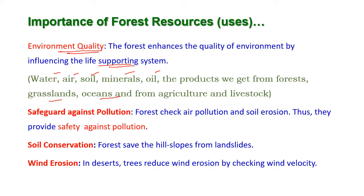Products from oceans and from agricultural livestock are very important for human life. Hence, by means of all these life supporting systems, the quality of environment is increased. Safeguard against pollution: forests check air pollution and also soil erosion, thus providing safety against pollution and erosion of soil.